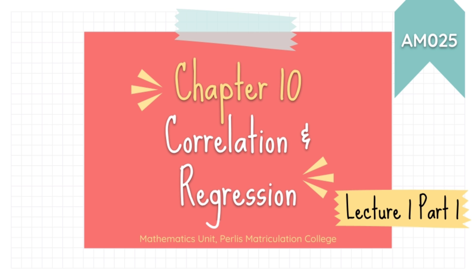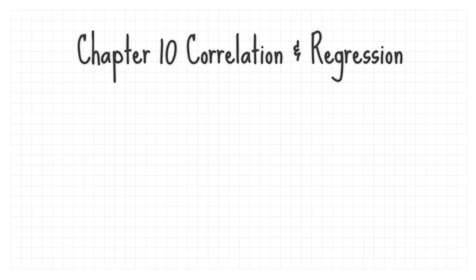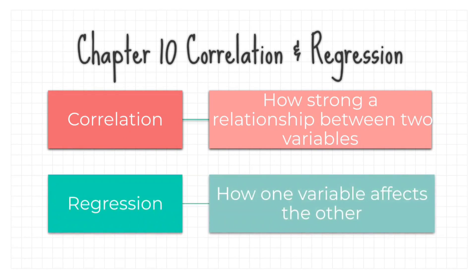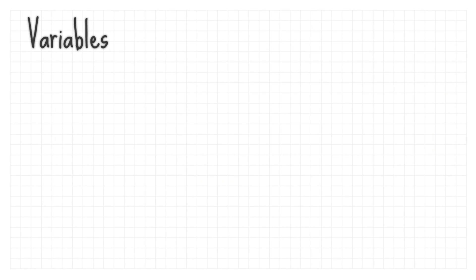Assalamualaikum, hi everyone. Today we're going to learn Chapter 10: Correlation and Regression. In this chapter, we're going to learn correlation — how strong a relationship is between two variables — and regression — how one variable affects the other.